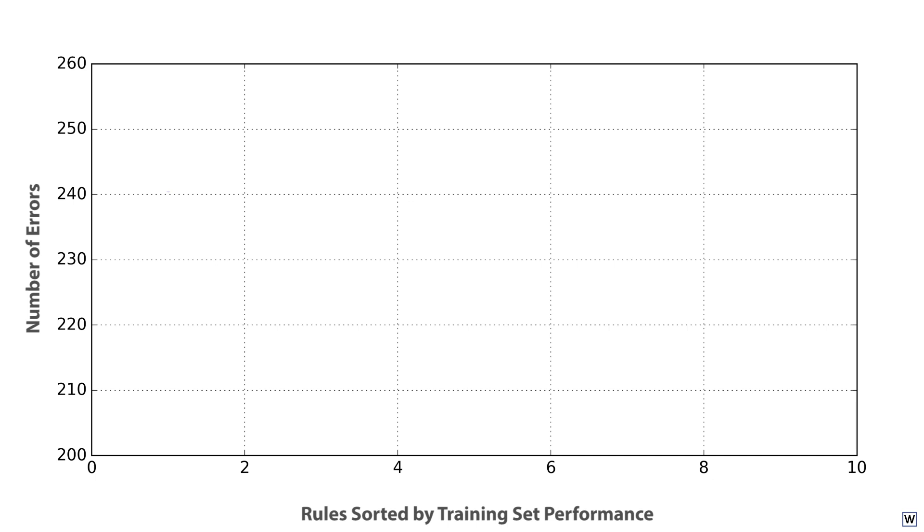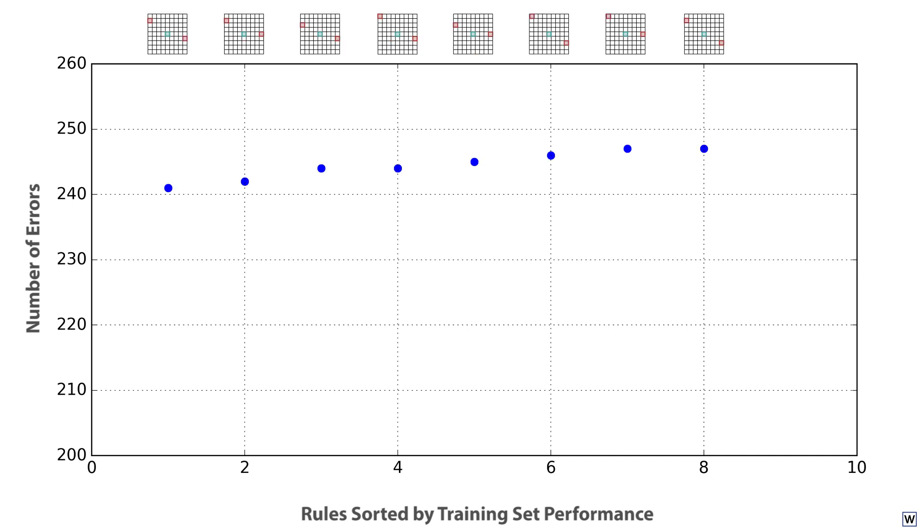If we sort all the rules we've tested in our search for the best 3-pixel rule by the number of errors on our training set, we see that there is a best-performing rule. But it's only a tiny bit better than our second best-performing rule.